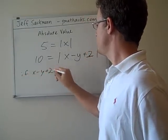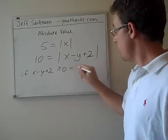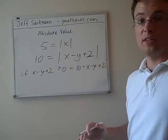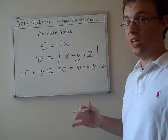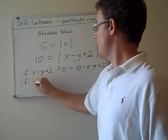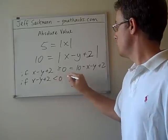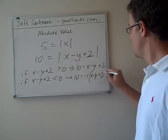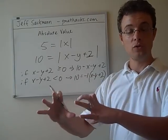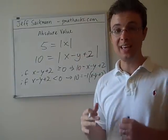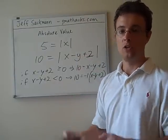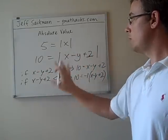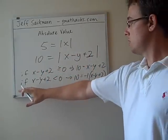If x minus y plus 2 is greater than or equal to 0, then 10 equals x minus y plus 2. We just don't change it, we just take away the absolute value signs. But if x minus y plus 2 is less than 0, then 10 equals minus 1 times x minus y plus 2. No matter how complex what's inside the absolute value signs gets, we can apply the same techniques.